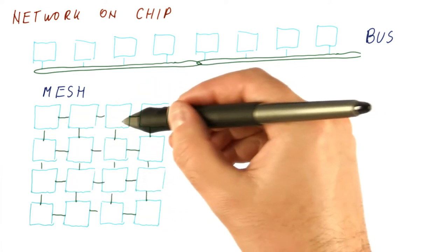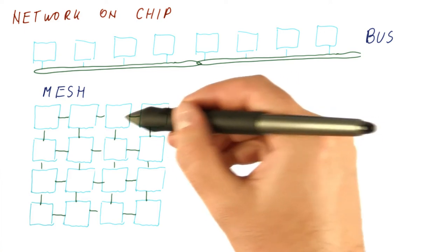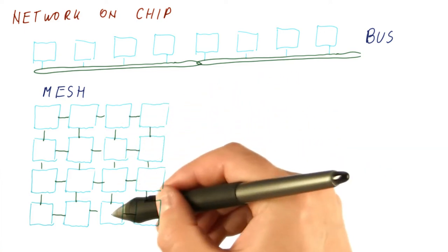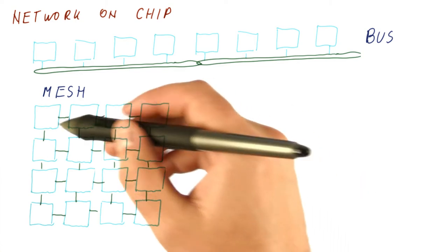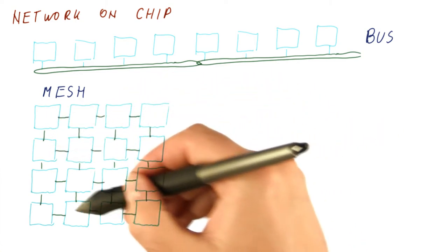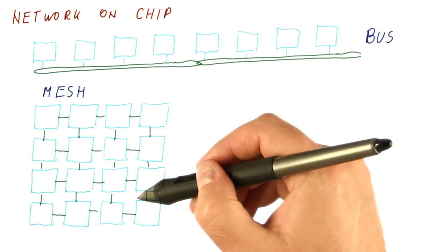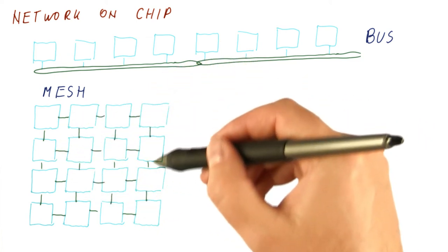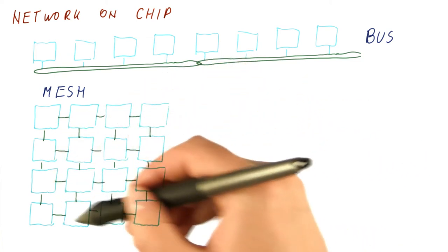Now if we have neighbor to neighbor communication, we can have these two talking, these two talking, these two talking, all over independent links. So as I increase the number of cores, I also increase the number of these links naturally so that the total throughput available in this network grows with the number of cores.